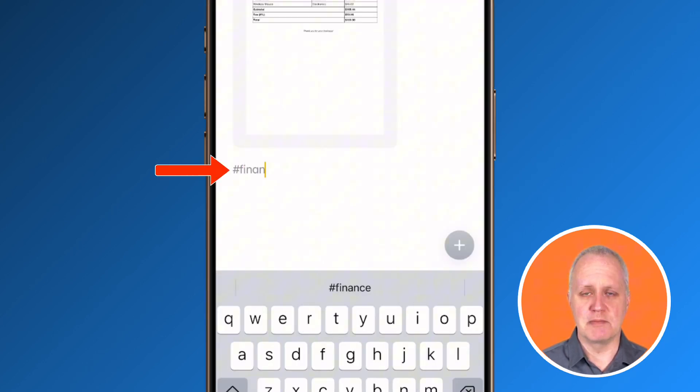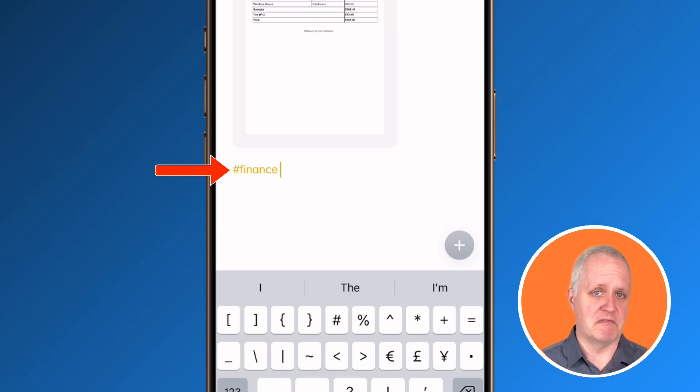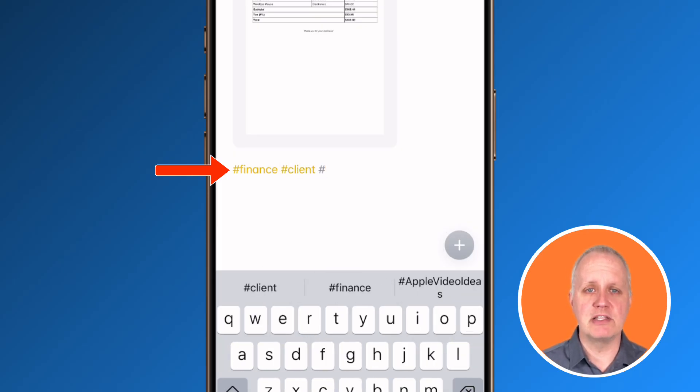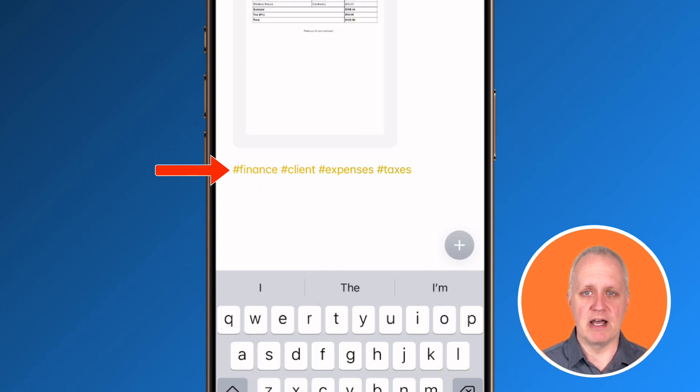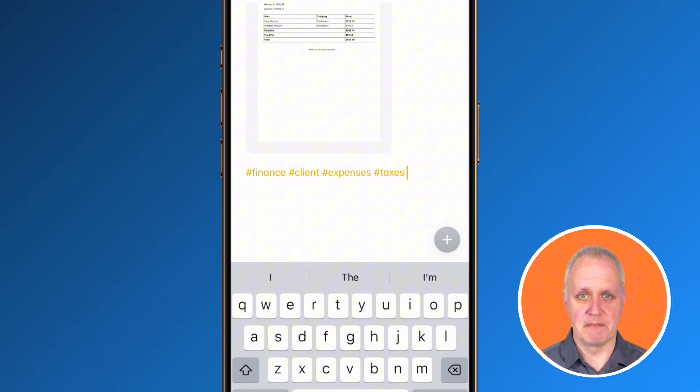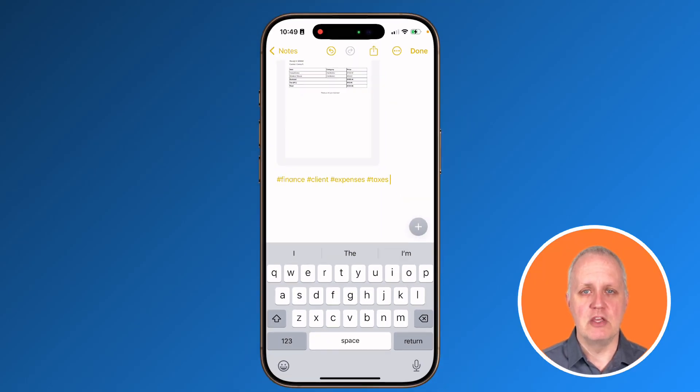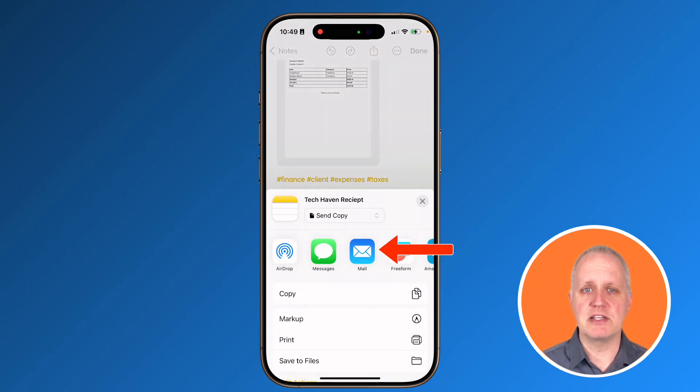Next, organizing scan documents is easy. Just tag them with things like finance, client, expenses, or taxes and they'll automatically sort into smart folders that you've created. No more digging through files when tax season rolls around. And if you need to share a scan document, you can export it straight from notes. Just tap the share button and you're ready to send it via email or save it to cloud storage.